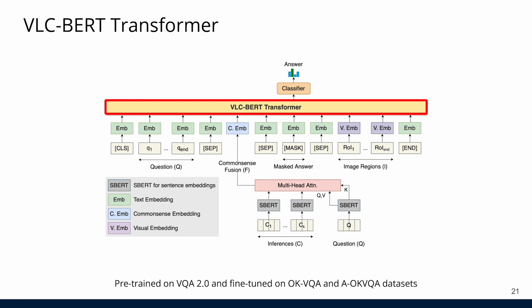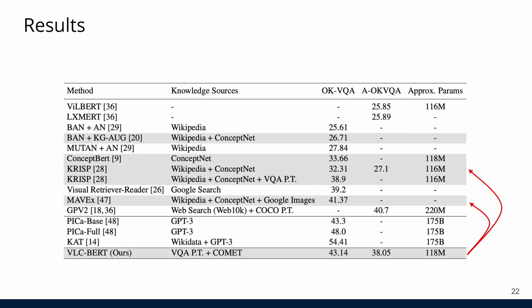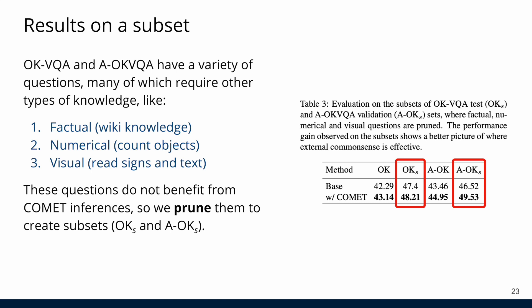Finally, this model is pre-trained on the larger VQA 2.0 dataset and is fine-tuned on OKVQA and AOKVQA datasets. In our evaluation, we show that our model outperforms other models of similar parameter size. In addition, we show significant improvements on smaller subsets of OKVQA and AOKVQA datasets. These subsets are obtained by pruning questions that require factual, numerical, and visual knowledge that COMET does not provide.